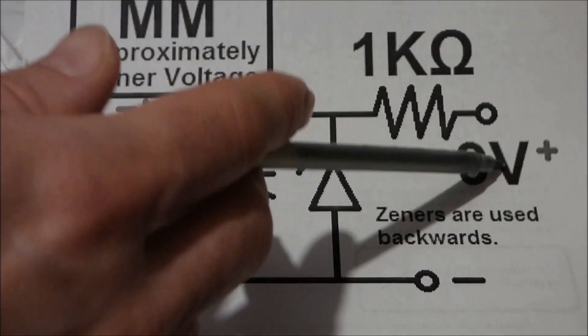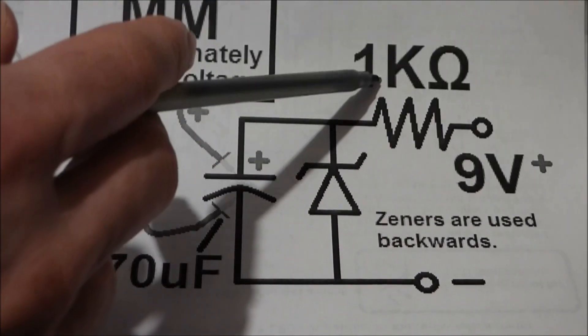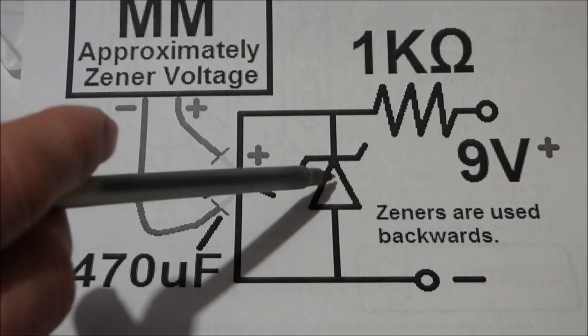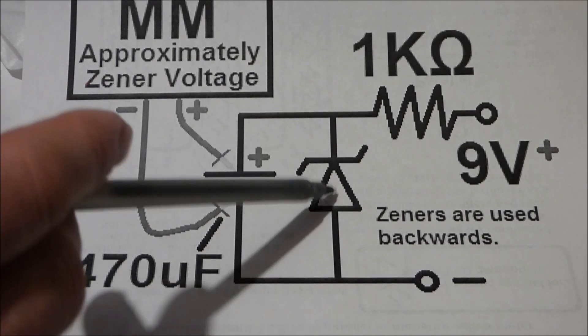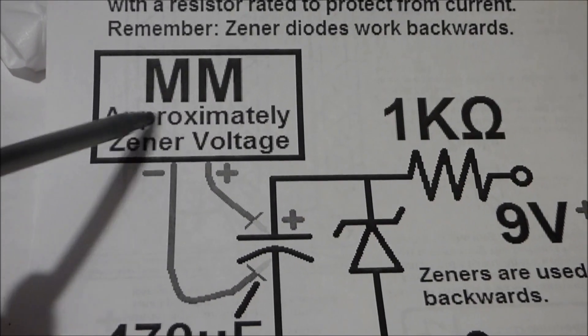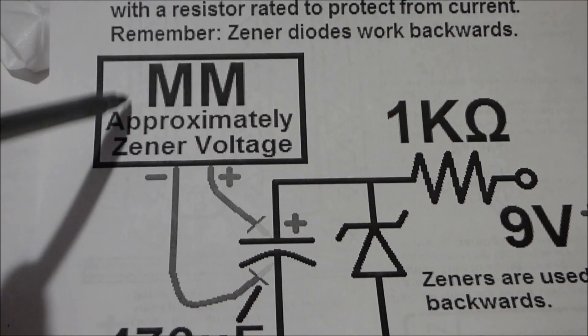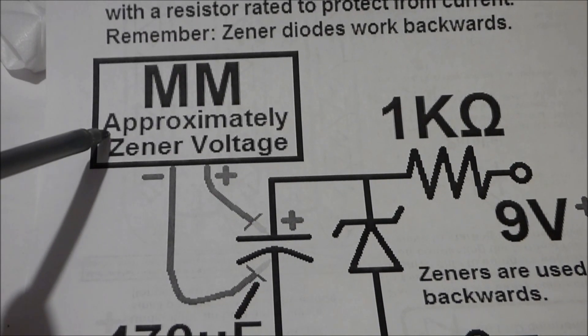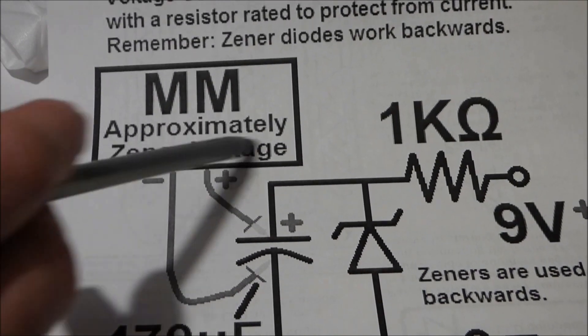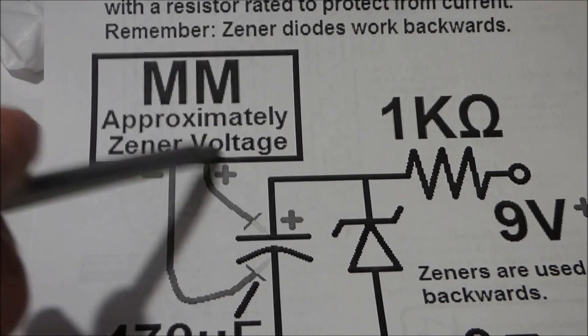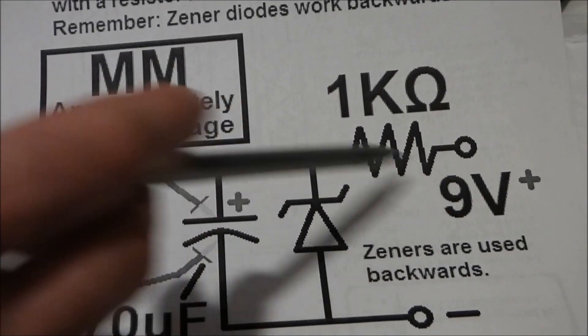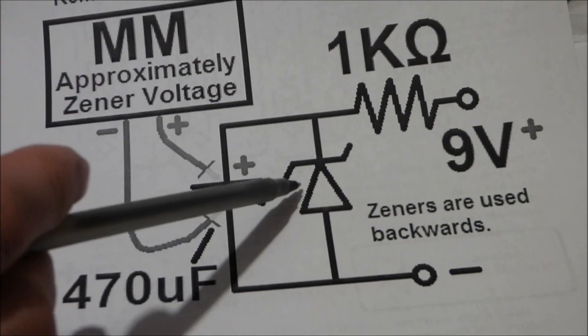Now when you change the voltage and the resistance, that can change how effective the Zener diode is. So it's not really perfect but this is close enough for our examples. But that's why I wrote here, when you're measuring with the multimeter, that the results you get on the display in voltages will be approximately what the Zener voltage is rated at. Because as I said, if you change the resistance or increase the voltage, it'll make the diode react differently.